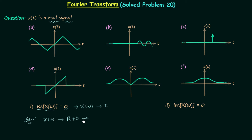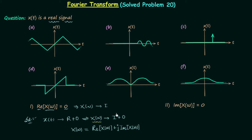In this scenario the corresponding Fourier transform will be imaginary and odd. We can write X(ω) = Re{X(ω)} + j·Im{X(ω)}, and as X(ω) is purely imaginary, Re{X(ω)} = 0, which is exactly what we are looking for.